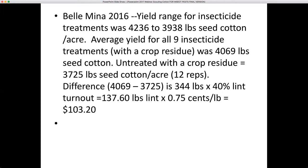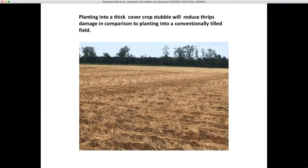Last year at Belvina, we had fairly decent thrips damage in our research plots. The yield range for insecticide treatments was about 4,000 to 4,200 pounds of seed cotton per acre. There were nine insecticide treatments — some foliar, some seed treatments, some a combination of both. All had a cover crop residue, which tends to reduce thrips damage. The average for the nine insecticide treatments was just over 4,000 pounds, while the untreated plots averaged 3,725 pounds. The net economic consequence of using seed treatments was about $100 per acre in value, minus the cost of the seed treatment. Planting into thick cover crop stubble will reduce thrips damage compared to conventionally tilled fields.